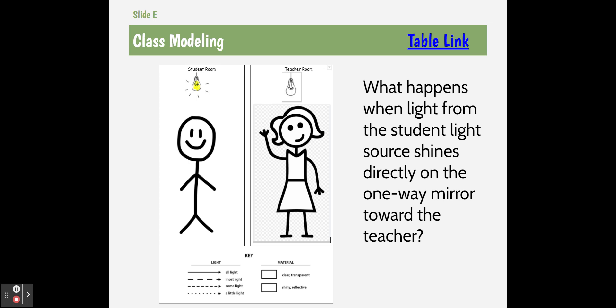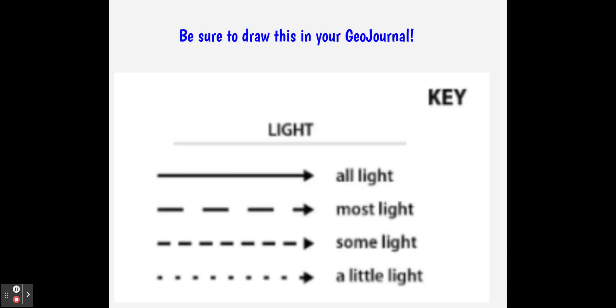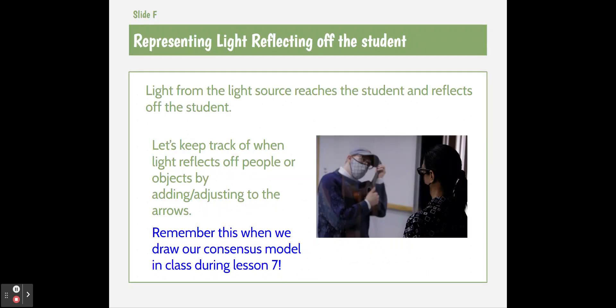So if I have 10 rays going to a mirror, 10 rays don't come back, less comes back. So in class, we discuss this key, and I ask them to write it in their journal, that as we model the unseen in a consensus model, we can model all light, most light, some light, and a little light. And in this model, we can use this when we do our science circle in lesson seven.